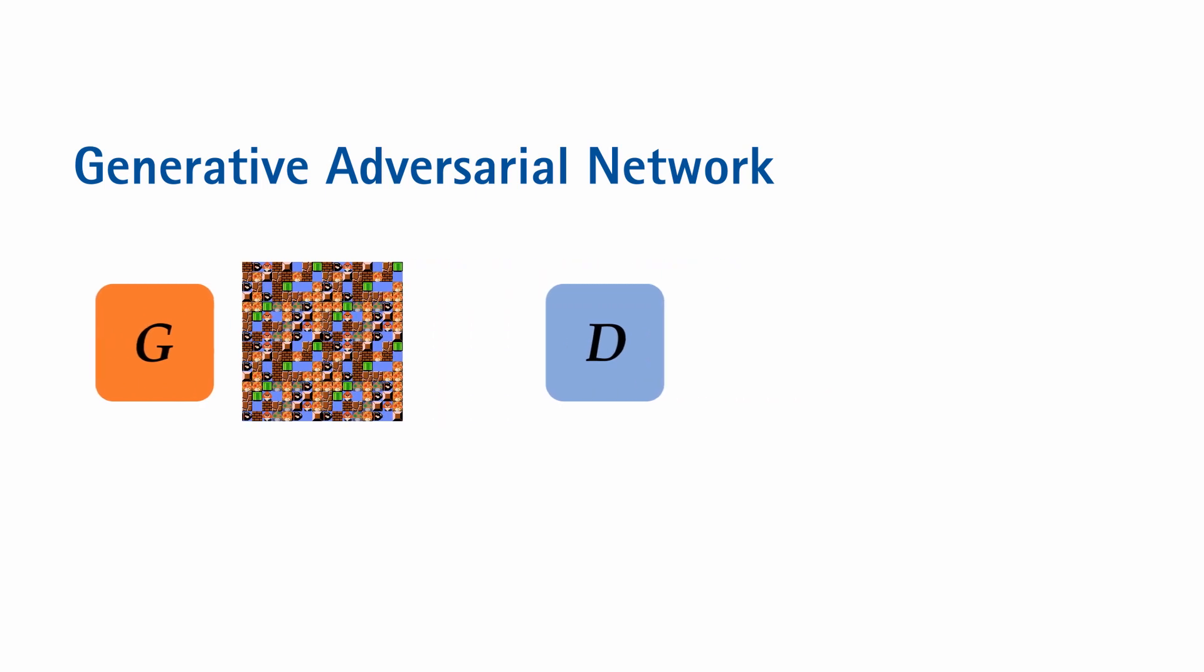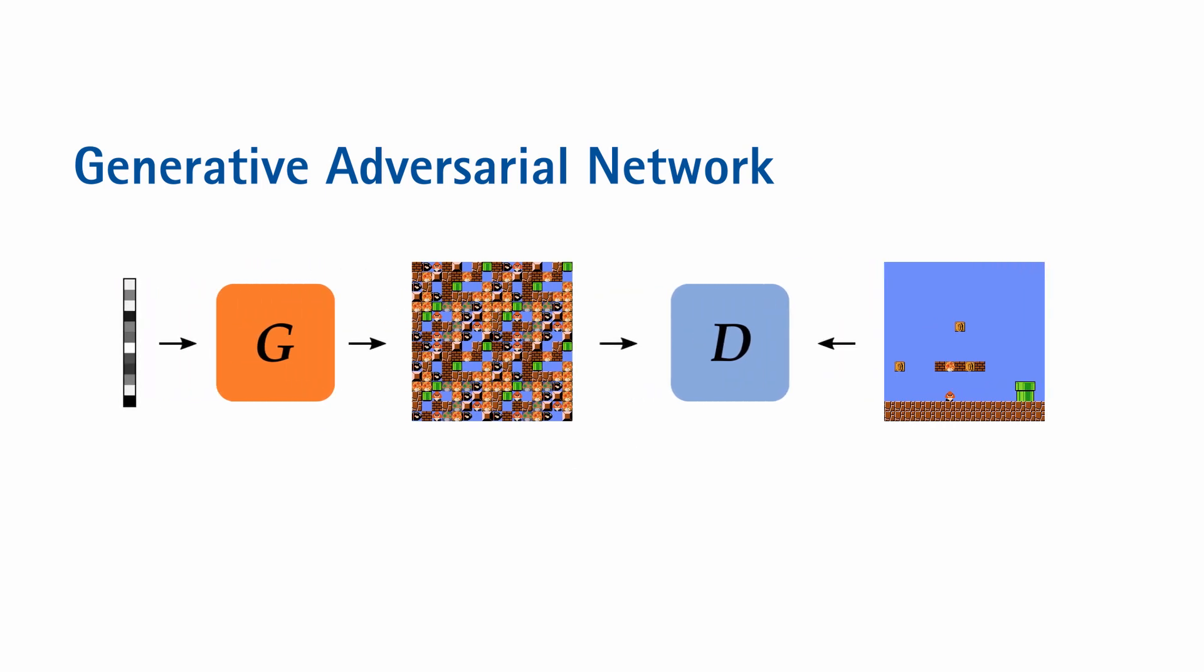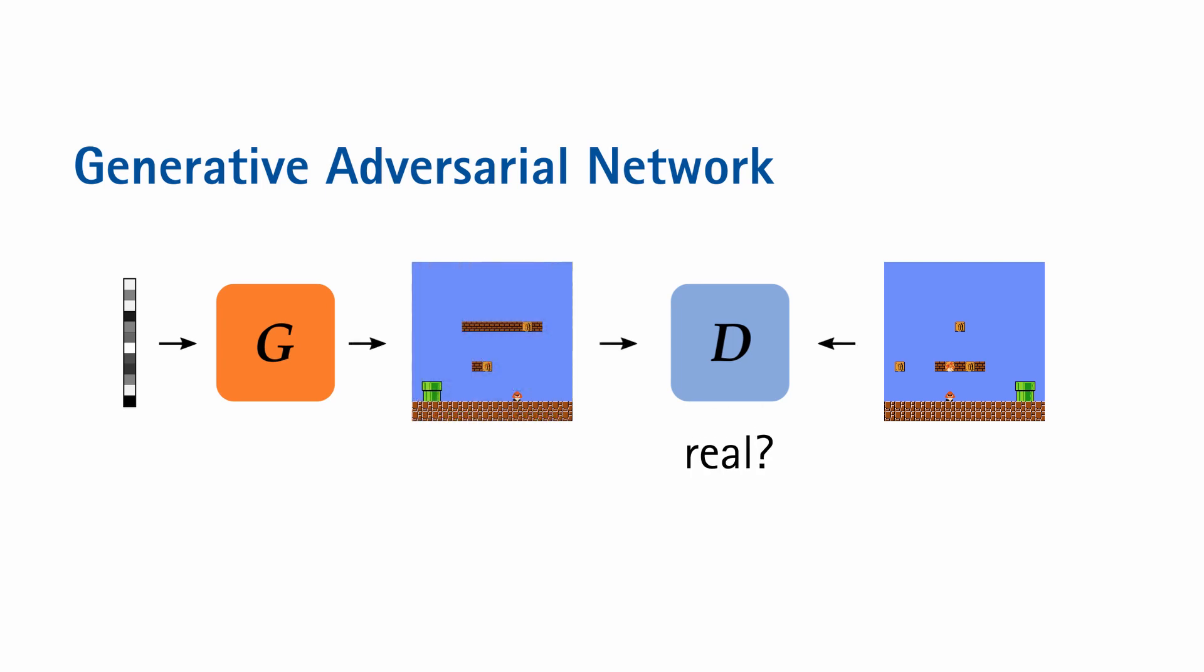This feedback is provided by the discriminator, which randomly gets either a sample from the real distribution or the fake generated distribution as an input, and then has to predict from which distribution it originally came. The goal during training is now for both the generator and the discriminator to get better and better at their tasks, until the generator's samples are so close to the original samples that the discriminator can no longer distinguish the two.